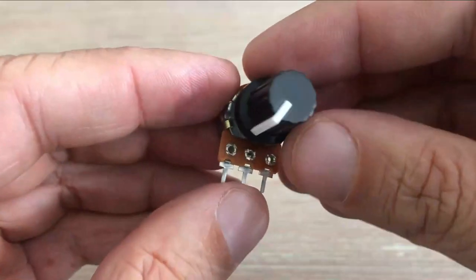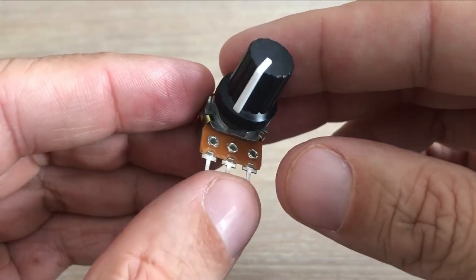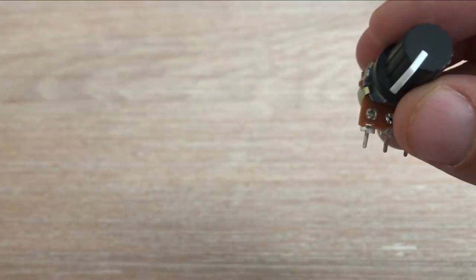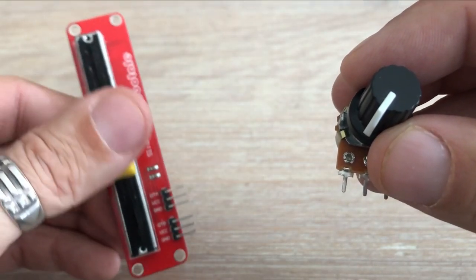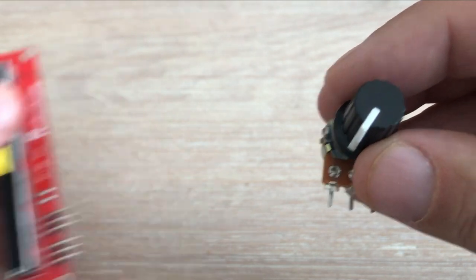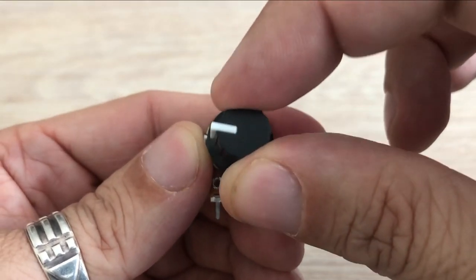A potentiometer is a type of a position sensor. They are used to measure displacement in any direction. Linear potentiometers measure displacement linearly and rotary potentiometers measure rotational displacement.